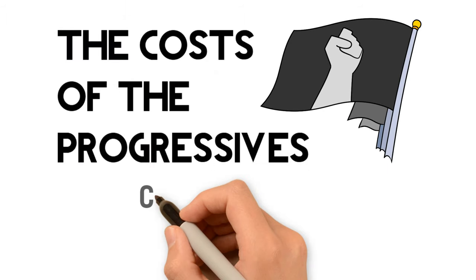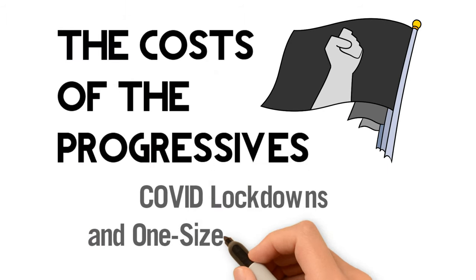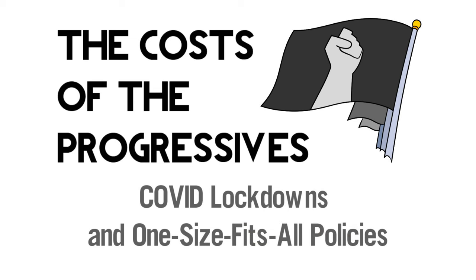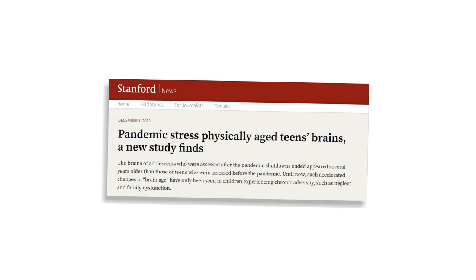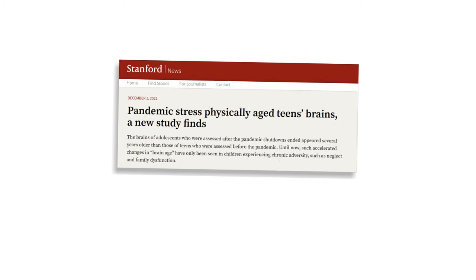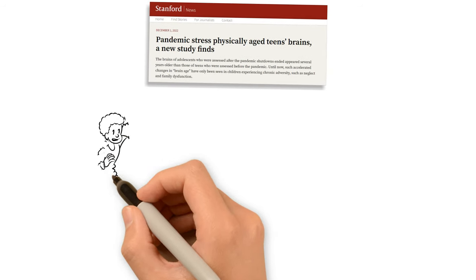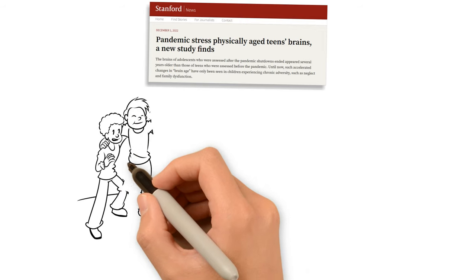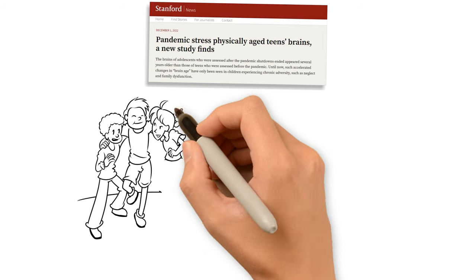Episode 7. COVID Lockdowns and One-Size-Fits-All Policies. In December 2022, the scientific journal Biological Psychiatry published a study that compared adolescent brain scans taken before and after the COVID-19 pandemic.